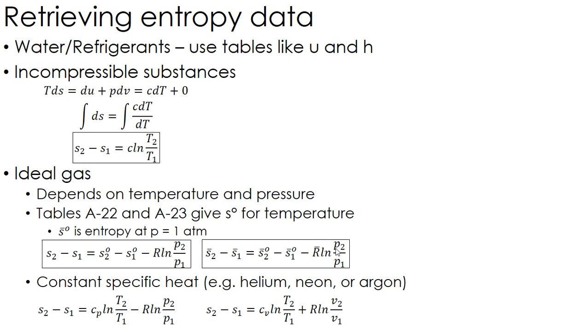But if I don't have tables and I know I have constant-specific heat for a gas, I can use these equations shown here, where I relate the entropy to C times the natural log of the temperature ratio, just like I did above for the incompressible substance, which I don't have tables for as well. But again, bottom line, if I have a table, use it. For water and refrigerants, look it straight up. If it's an ideal gas, remember you're looking up this S naught, and you have to plug it into this equation to find the actual change in entropy.